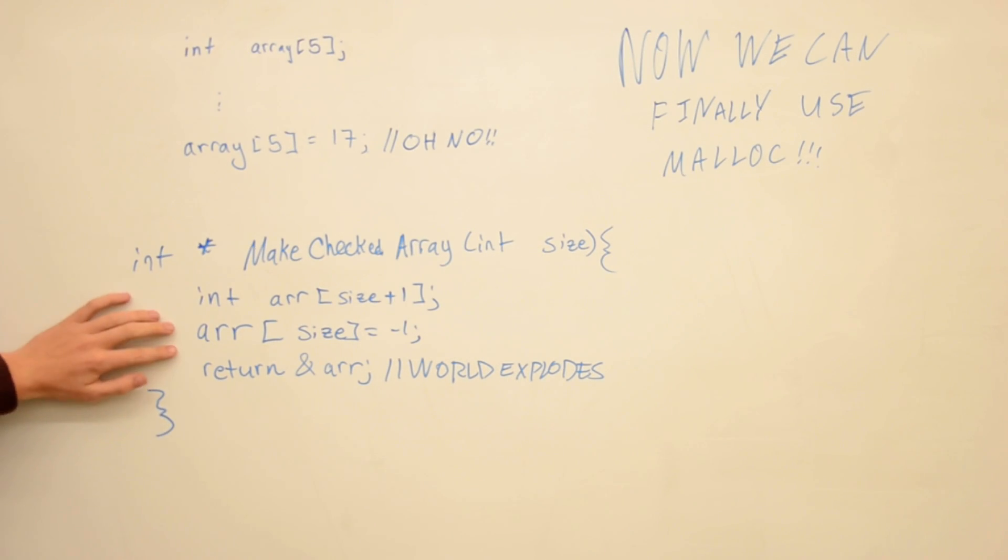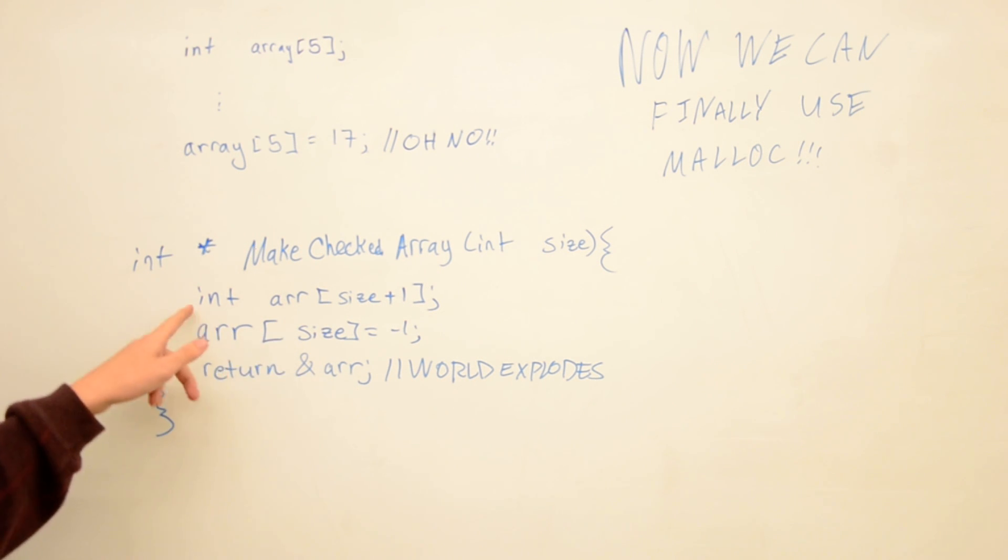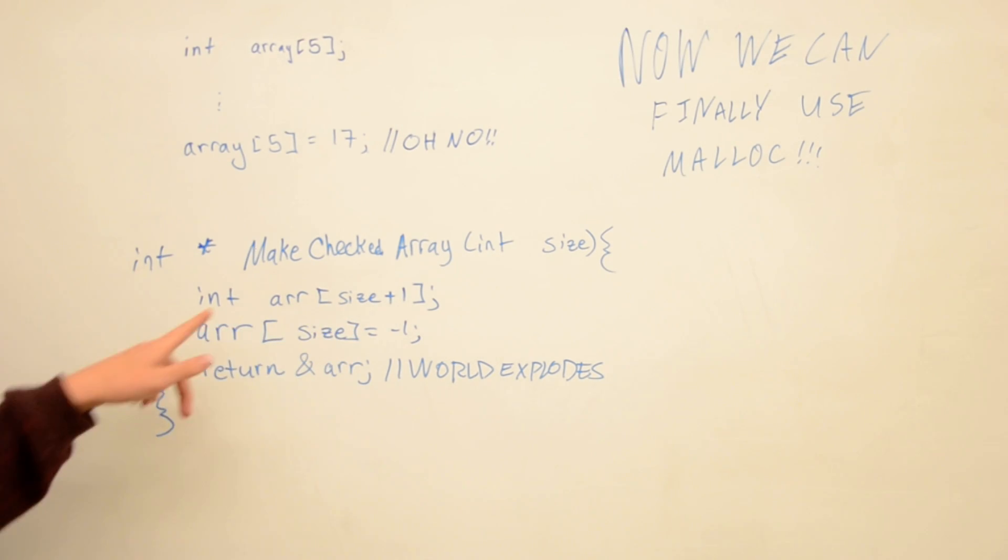Now as it's written, this function doesn't work. Like I've been talking about with the last two lectures about malloc, when you return something from stack, it actually goes out of scope and it's not guaranteed to be anything anymore. So we're going to need to rewrite this function using malloc.